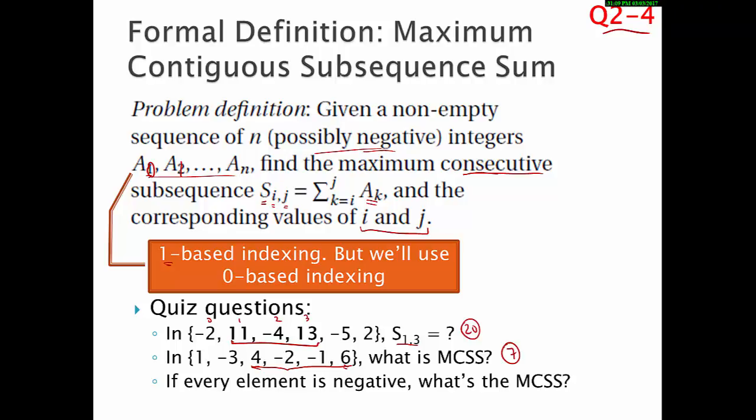And the third, or question four here, so if everyone's negative, what's the MCSS? And we said zero because if everyone were negative, adding any single one makes it negative, so it makes it smaller than zero, so it's going to be non-maximal. Smaller than actually taking the empty subsequence.